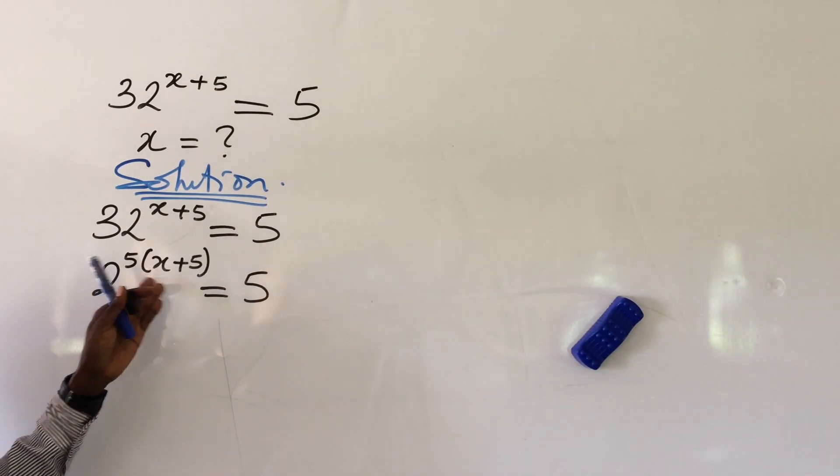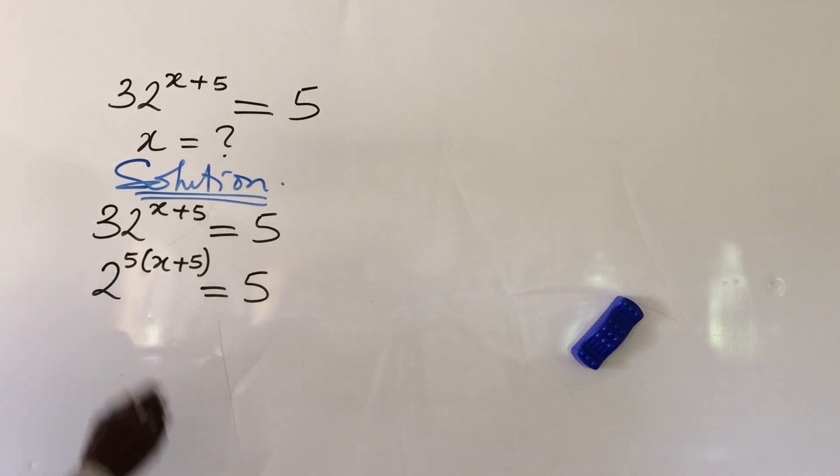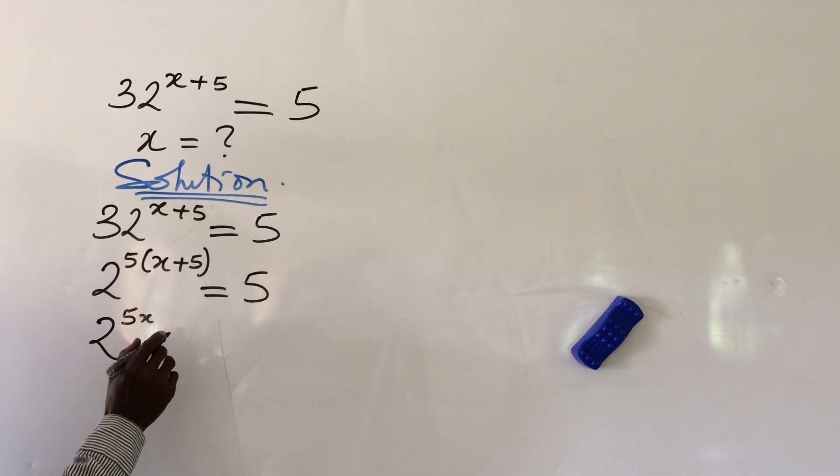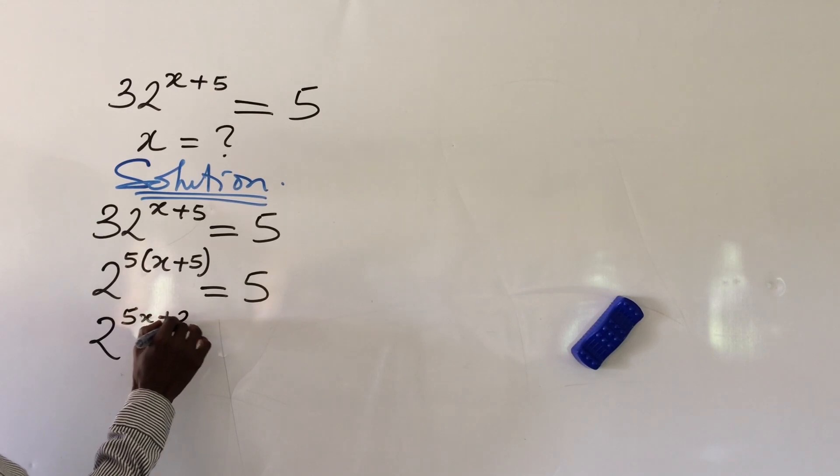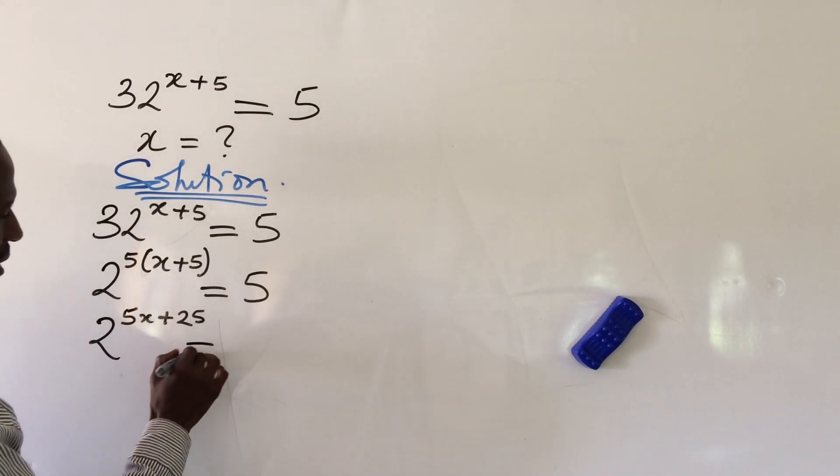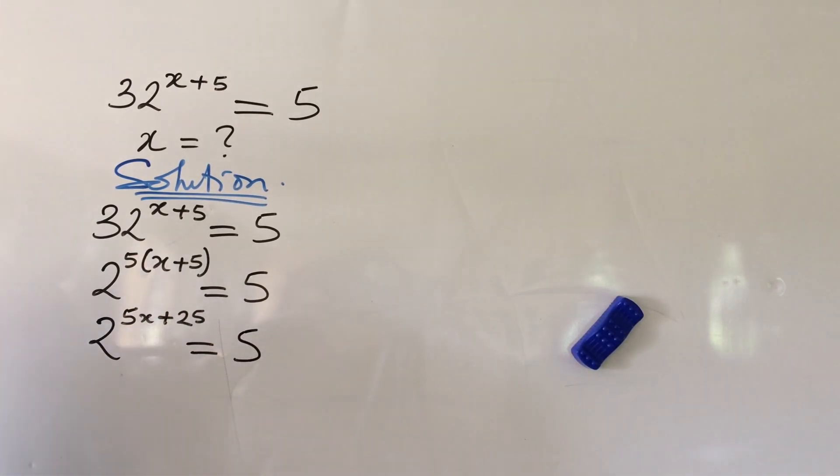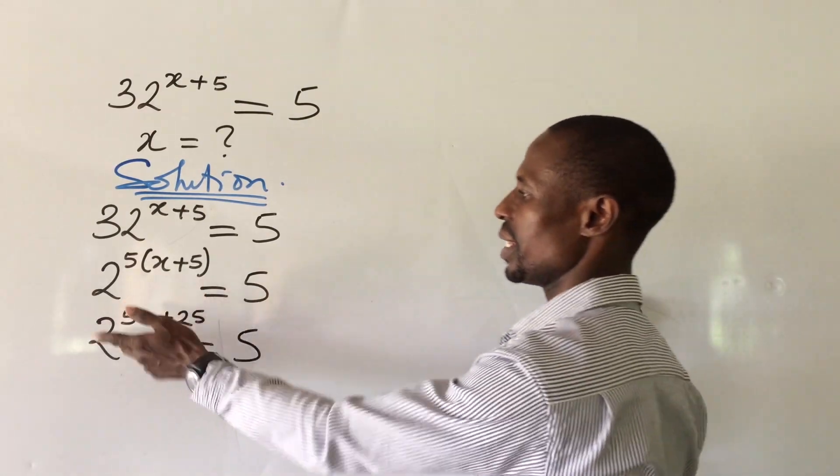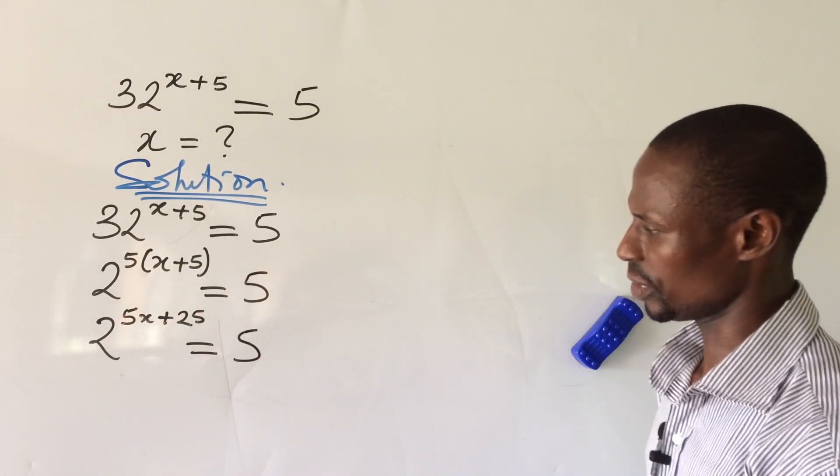You can go ahead to use 5 to open up this bracket here. So this will give us 2 to the power of 5 times 5 will give us 25 plus 25 everything equal to 5. All right. Take a look at this. The x we're looking for is still up here.